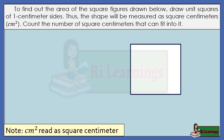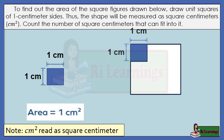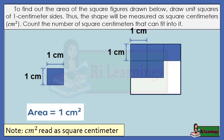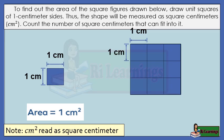To find out the area of the square figures drawn below, draw unit squares of one centimeter sides. Thus, the shape will be measured in square centimeters. Count the number of square centimeters that can fit into it: one, two, three, four, five, six, seven, eight, nine. There are nine squares that fit into it. The area of the square is nine square centimeters.